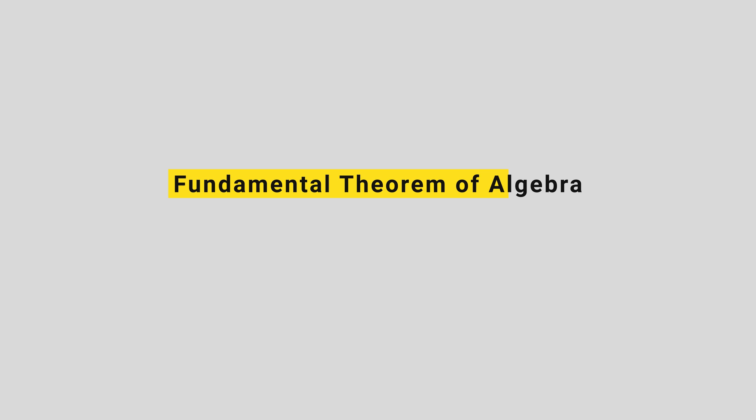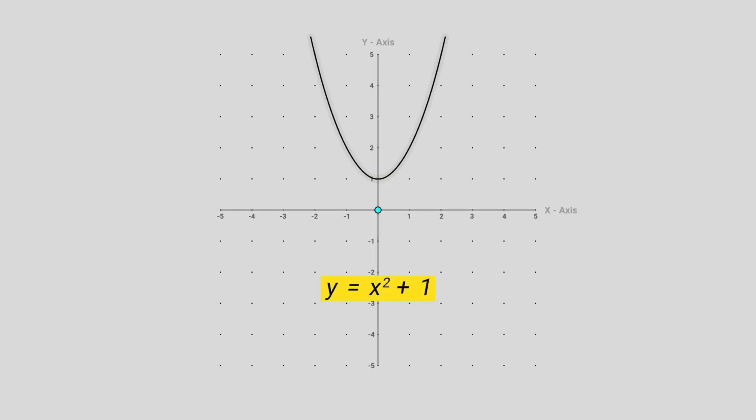But there is a problem. According to the fundamental theorem of algebra, polynomials of degree n have exactly n roots, and our polynomial has a highest power of 2, so we should have two roots. But here, our graph seems to disagree with the fundamental theorem of algebra.